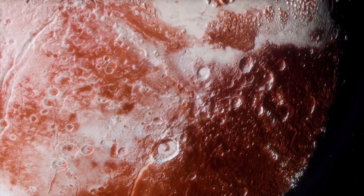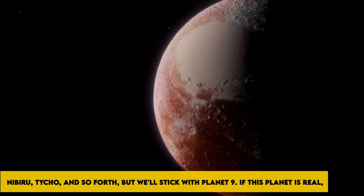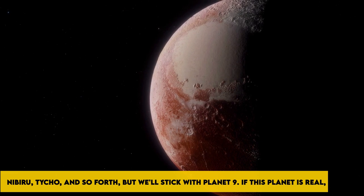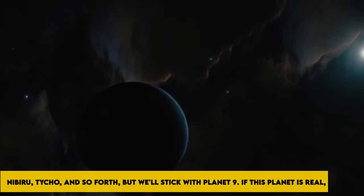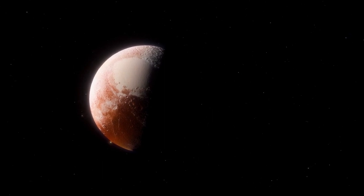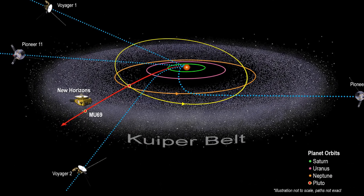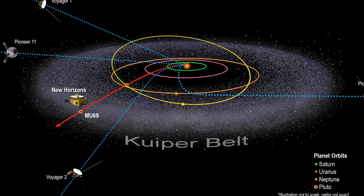How much do we know? The names suggested to this hypothetical planet are numerous: Nibiru, Tycho, and so forth, but we'll stick with planet 9. If this planet is real, it would be orbiting beyond Pluto, that annoying dwarf planet, billions of light-years away, in a region of the Kuiper belt with little or no energy coming from the sun.